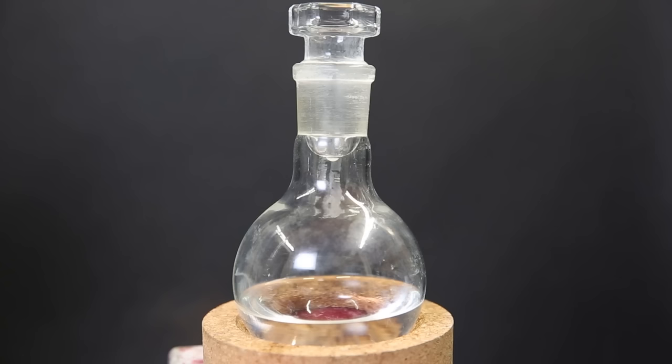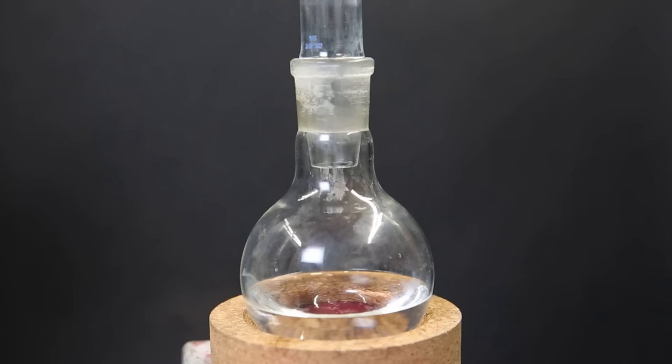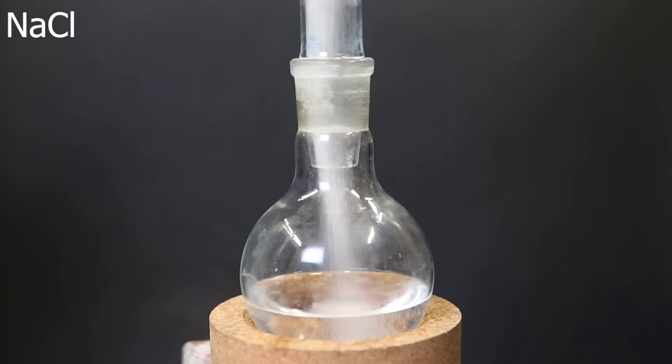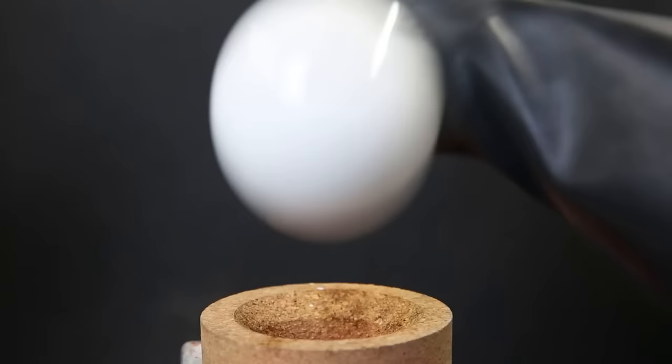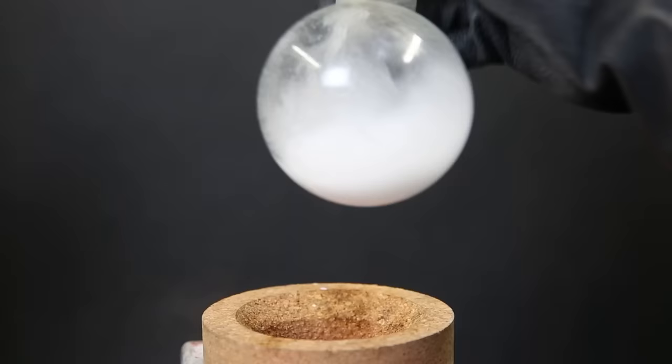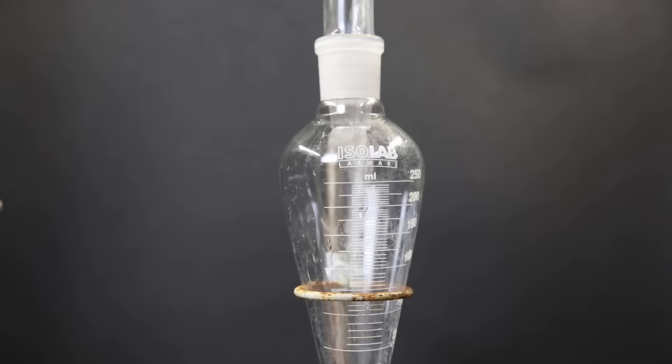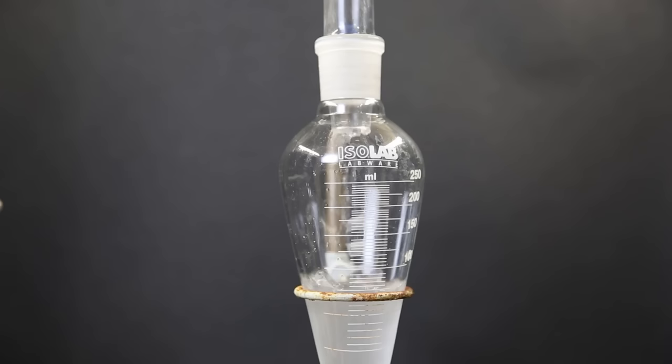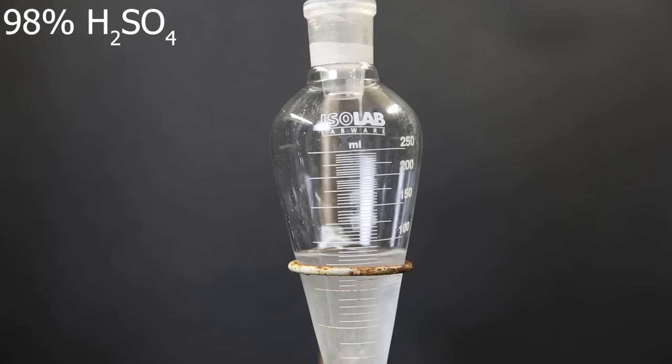So one more method I read in an old patent was salting out the trimethylborate by saturating the methanol with sodium chloride, which should then form two layers with trimethylborate on top and methanol on the bottom. So I added a bunch of sodium chloride and shook it around, but I didn't see any separation. Then I moved it all to a separatory funnel and still there were no layers to be seen. So I guess it didn't work.